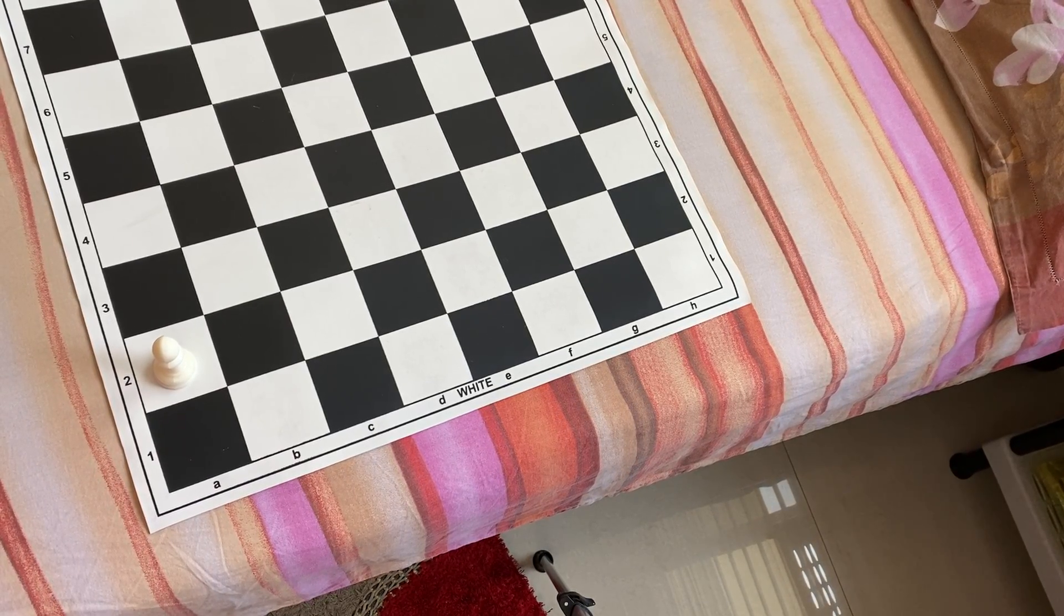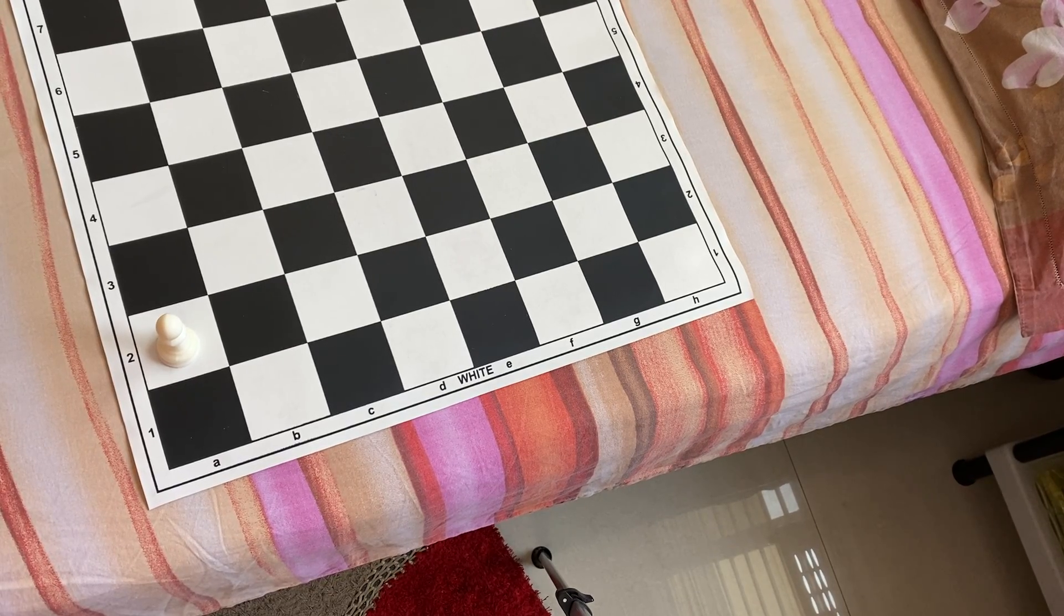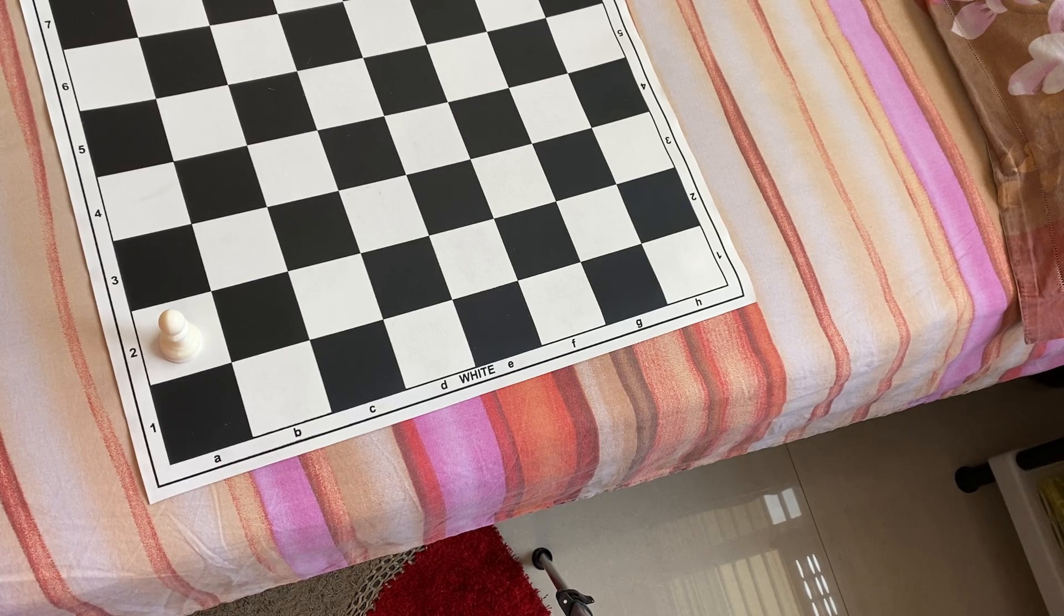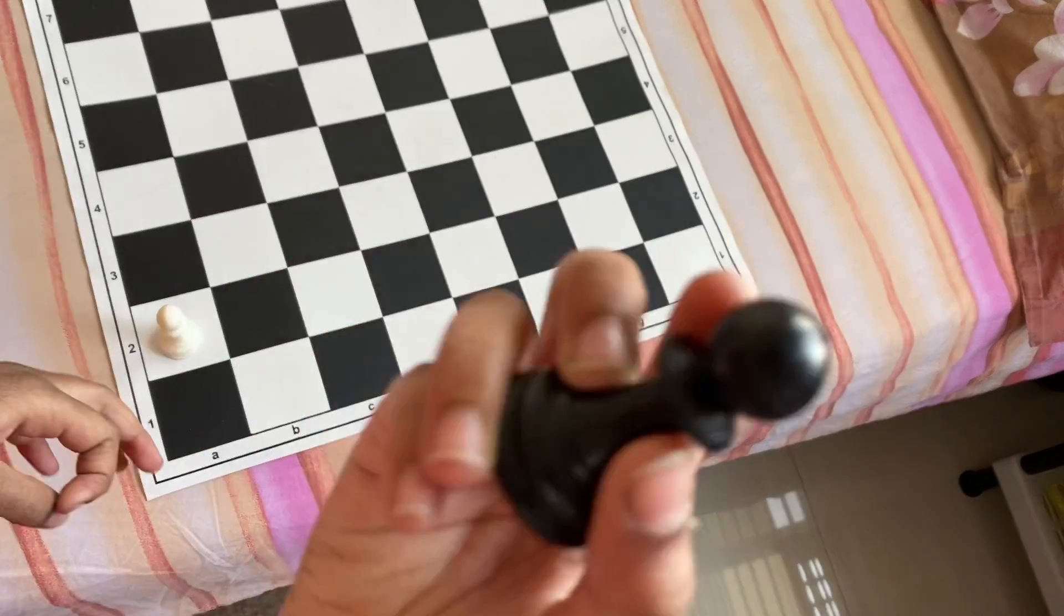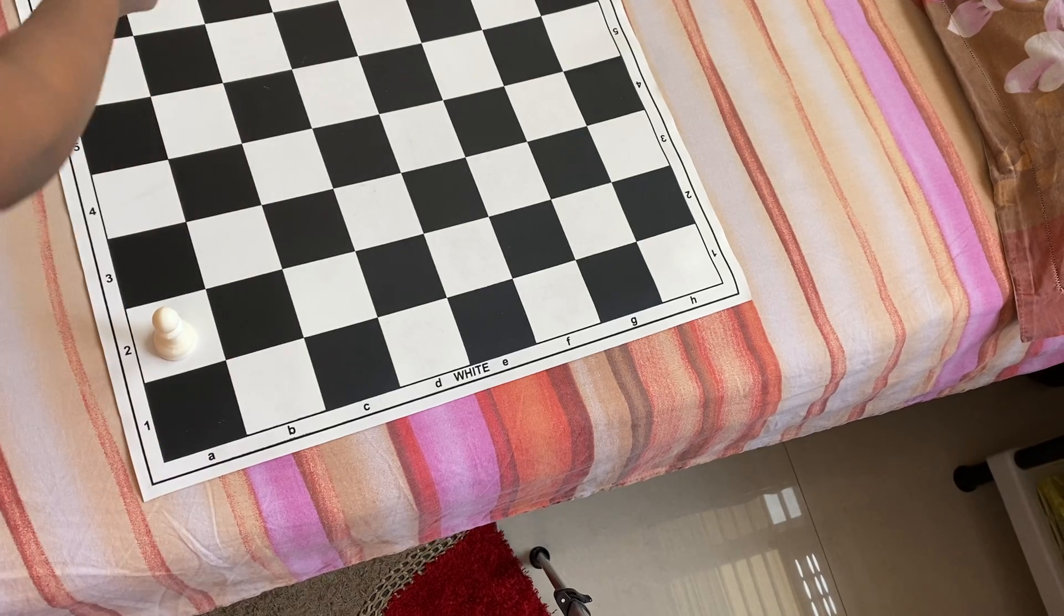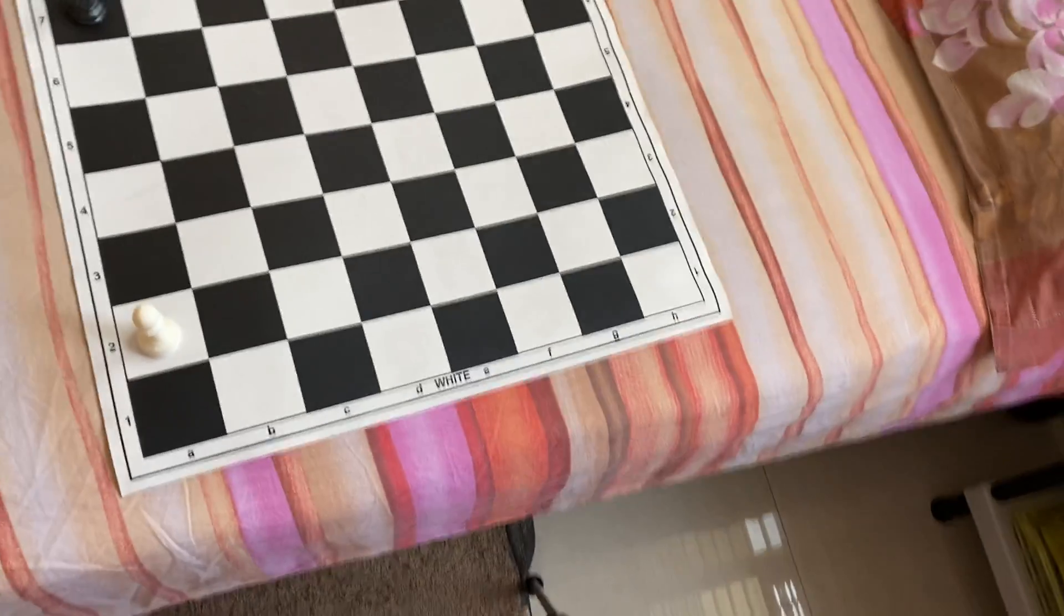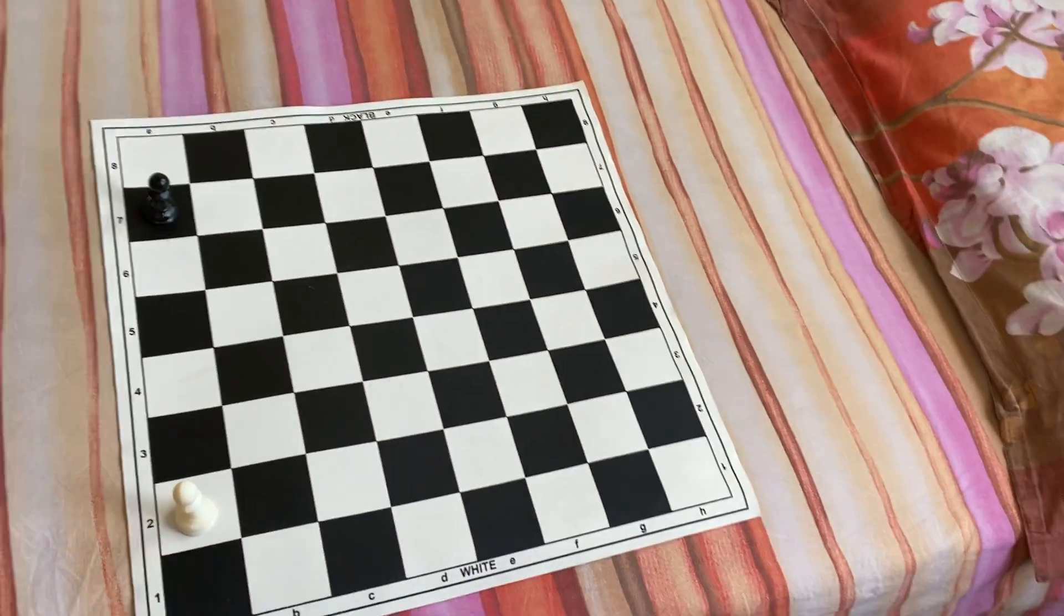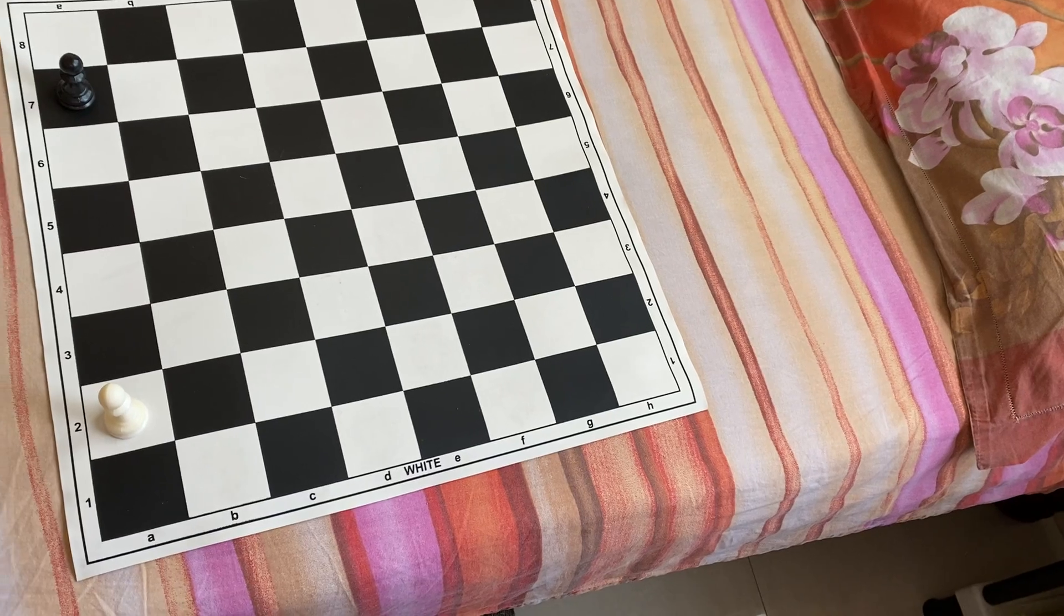So you are supposed to choose this wisely when you are in a situation where you think like some other pawn or some other piece can capture you. So I have kept 2 pawns. I am going to adjust the camera like this. Alright, done.